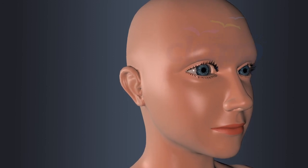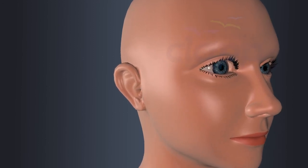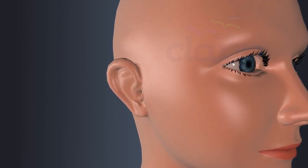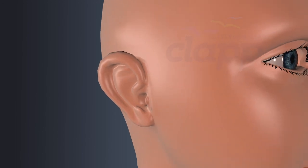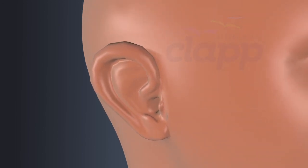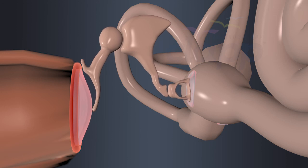The shape of the pinna helps to capture sound waves from different angles, helping us to determine the direction from which the sound is coming.